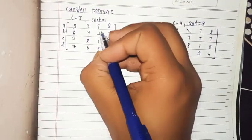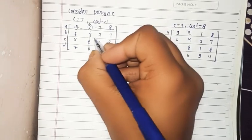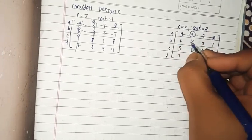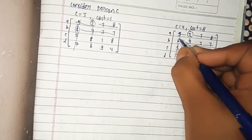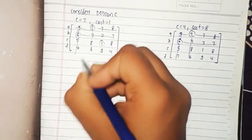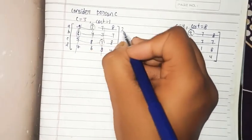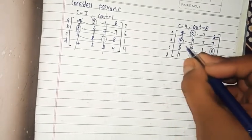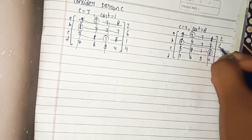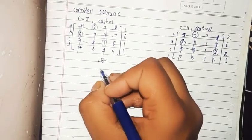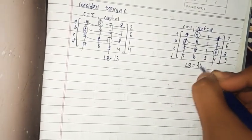For person C assigned to job 3, applying the same process yields values 2, 6, 1, and 4. For person C assigned to job 4, the cost 8 is circled, leaving remaining values of 2, 6, and 9. The LB for C3 is 30 and for C4 is 25, but the overall minimum so far remains 13.